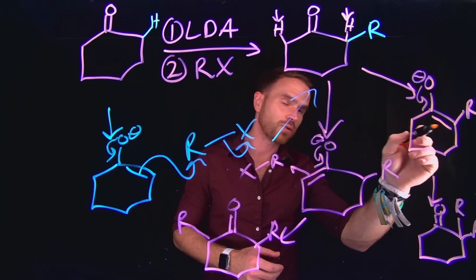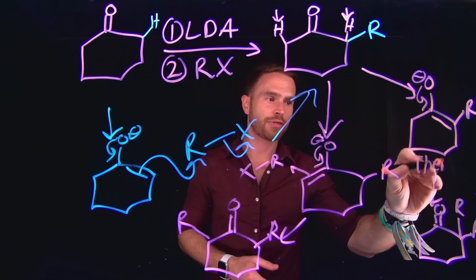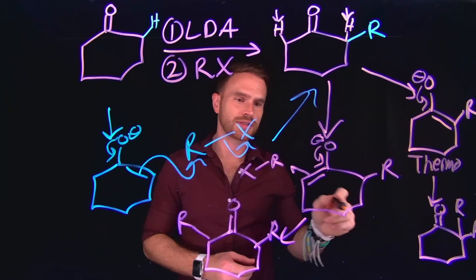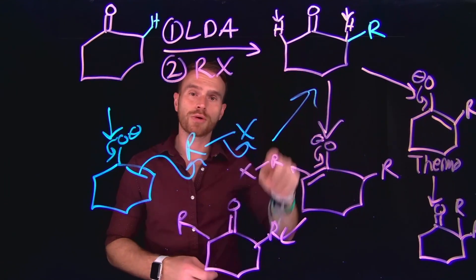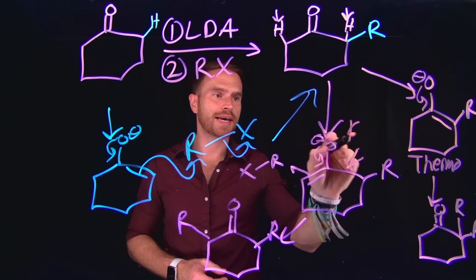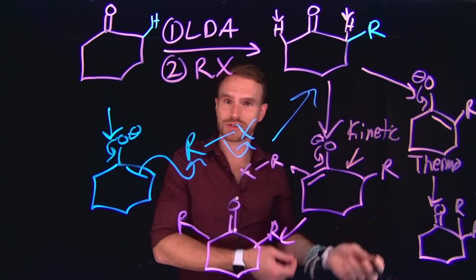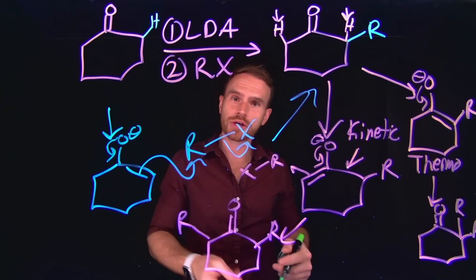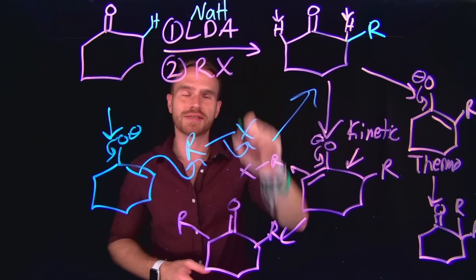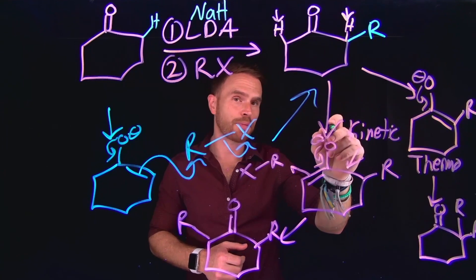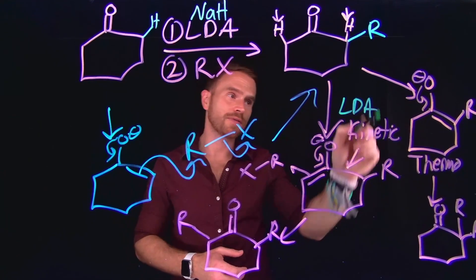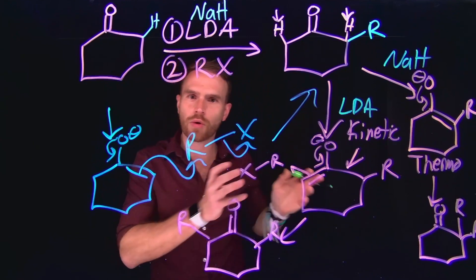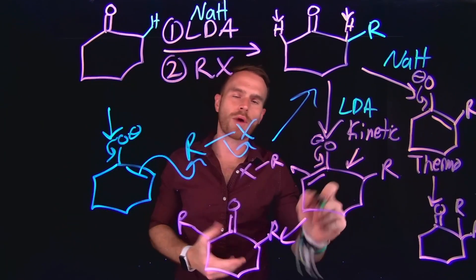Now importantly, the more substituted enolate is going to be a more stable species, so we would call that the thermodynamic product or the thermodynamic enolate. However, because it's more substituted, there is some steric hindrance there. So the alpha hydrogen at the less substituted position would react faster — we call this one the kinetic enolate. So one is faster, but one is more stable. The way that we would selectively choose which one to form depends on which base we're using. Sodium hydride is another strong base that can be used instead of LDA. If we wanted to form the kinetic product, the base we would choose would be LDA. And if we wanted to form the thermodynamic product, the base we would choose would be sodium hydride.